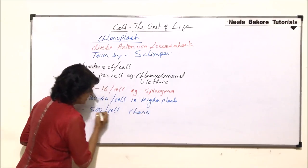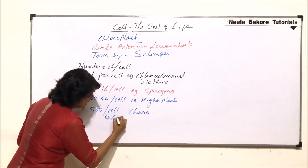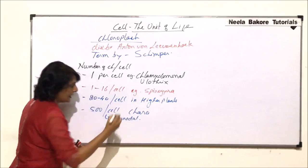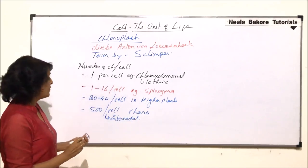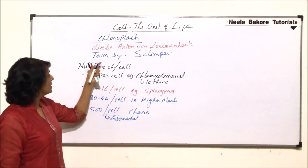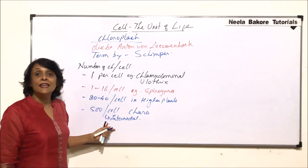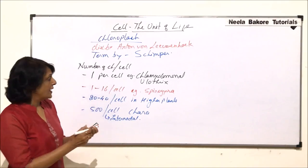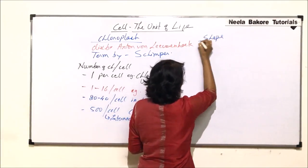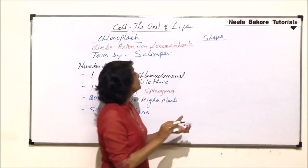500 chloroplasts per cell have been reported in Chara, and the cell in which this number was found was the internodal cell of Chara. So the number of chloroplasts per cell is variable. When we talk about the shape of chloroplast, the shape is also variable. We'll take some shapes which are important.